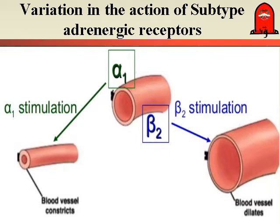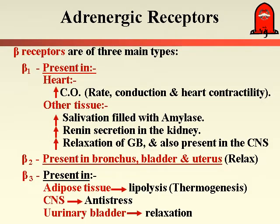Adrenergic stimulation can produce vasoconstriction, vasodilation, or both, depending on receptor availability. During exercise, there will be vasodilation of blood vessels in skeletal muscle — because they have beta-2 receptors — but vasoconstriction in the blood vessels of the intestine, which have alpha-1 receptors. Beta-1 receptors are present in the heart and are responsible for increasing rate, conduction, and contraction, producing increased cardiac output. Beta-1 may also be present in the salivary gland, urinary system, increasing renin and relaxation of the bladder, and in the central nervous system.